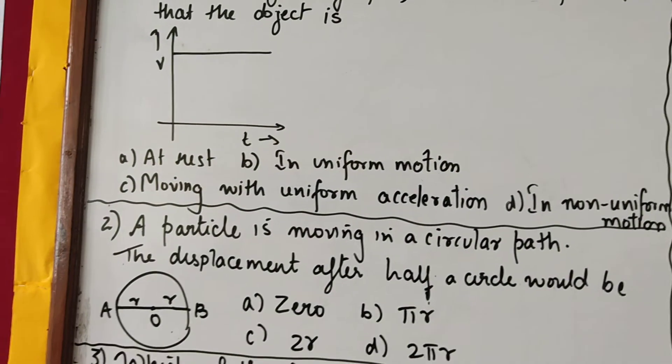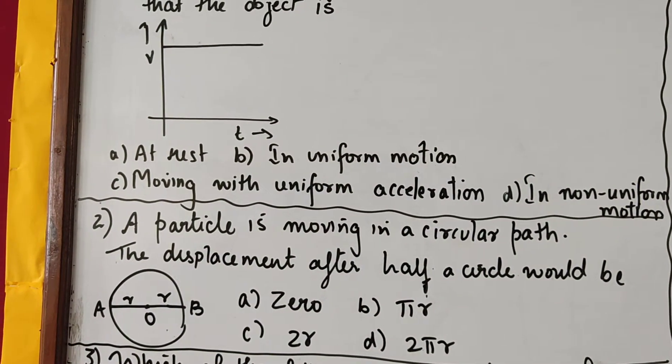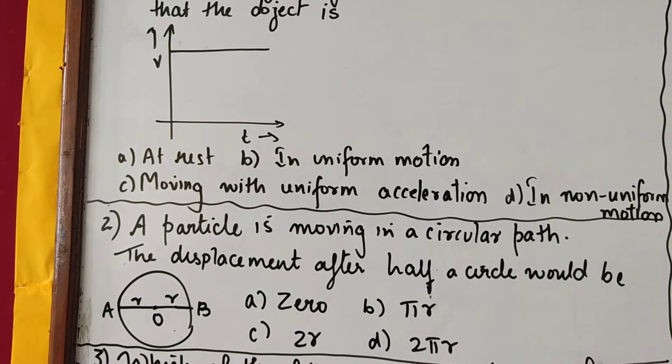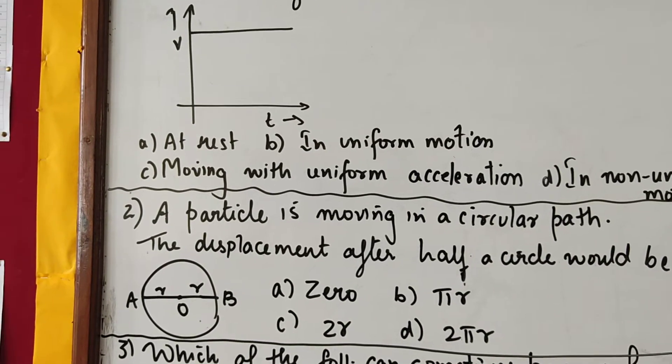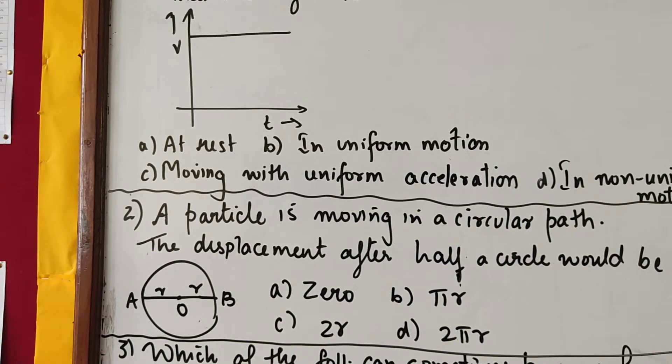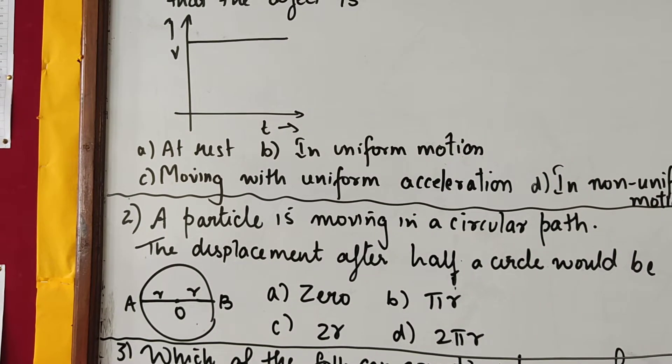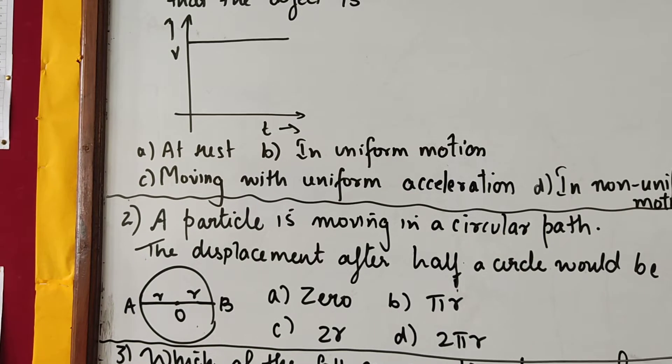Now, the second MCQ is: a particle is moving in a circular path. The displacement after a half circle would be - there are four options given: 0, pi r, 2r, 2 pi r.